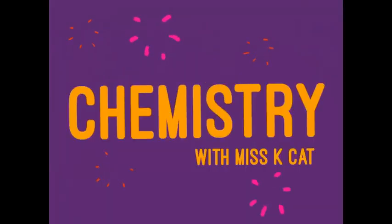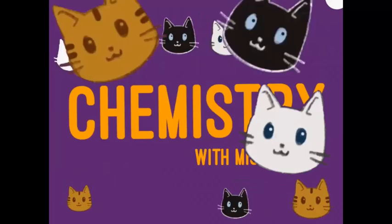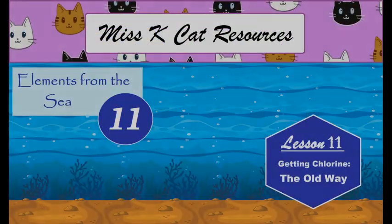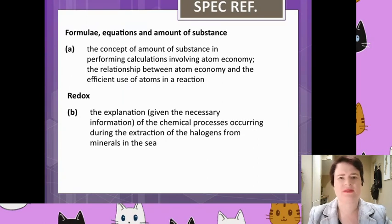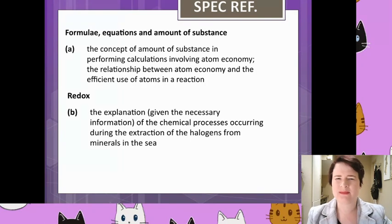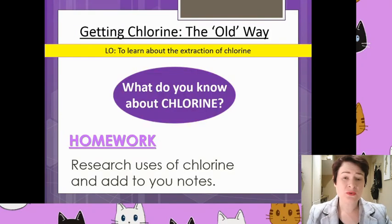Hello and welcome back to the wonderful world of chemistry. Today we are looking at chlorine. Linking back to the specification references, we're going to be looking at the continuation of how we actually get it from the sea and the processes involved, but in addition to that we're going to start looking at green chemistry in more detail. We're going to have a look today at atom economy, so the title for today's lesson is: getting chlorine the old way.